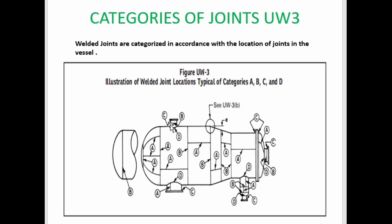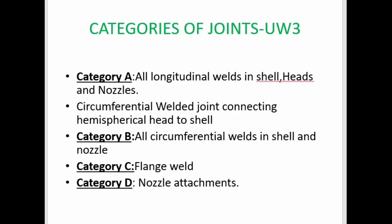A flange attached to a nozzle is described as a Category C joint, whereas Category D is a nozzle attachment — a nozzle connected to the vessel. Category C also consists of butt joints that connect a flat head to shell; this flat head connected to the shell is also considered a Category C joint.